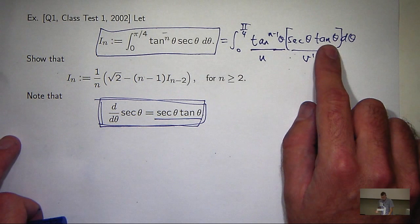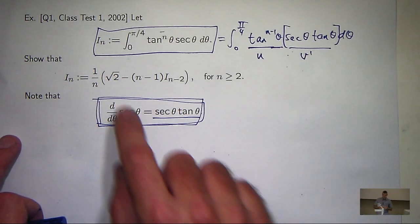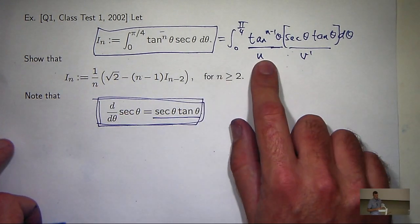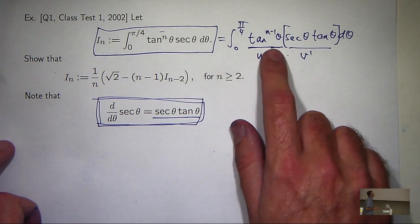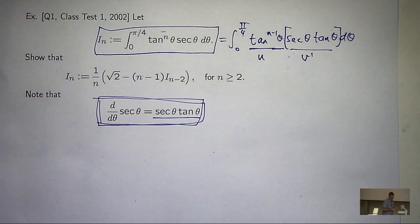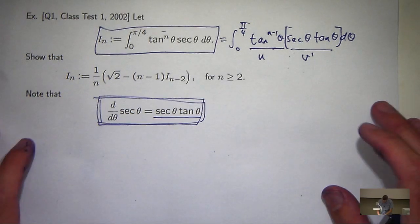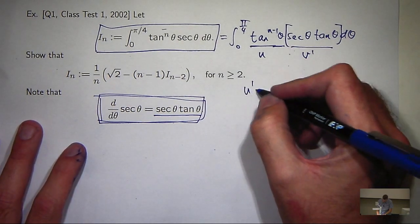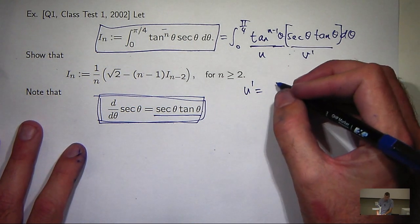And if that's my u, then I can just differentiate that. Right? And again, I guess reduce the power somehow, right? So if I differentiate, what am I going to get? Sec theta.